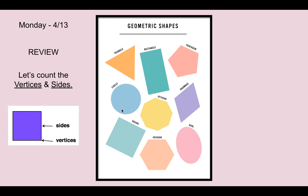If we look here at the circle — a circle is one we haven't reviewed as much — we can see that there are no vertices, and there are no sides. A circle does not have vertices or sides.